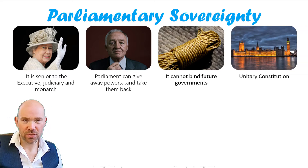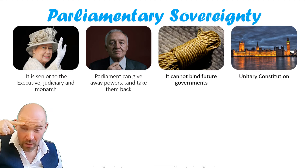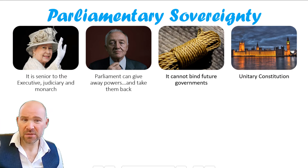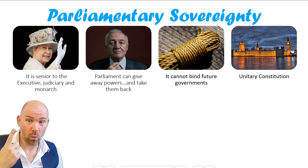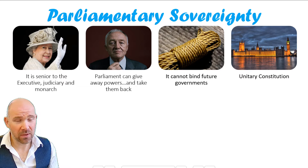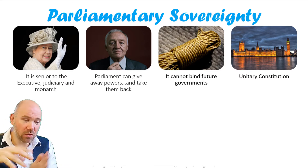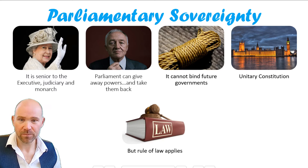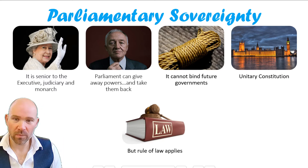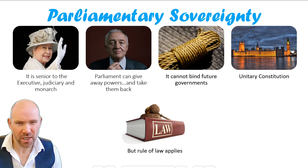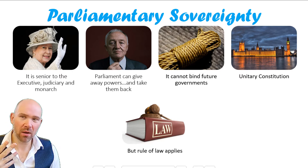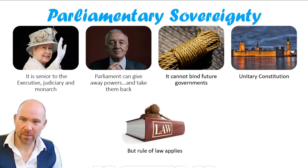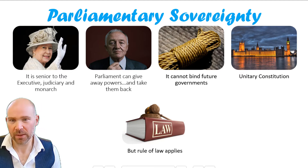It's also a unitary constitution — 'uni' meaning one, like unicycle, one wheel. All power in the constitution ultimately lies in one place: parliament. Unlike a federal constitution, where power is split between the federal government and state governments, in a unitary system it all comes from one place. The rule of law applies — individual members of parliament and parliament itself must follow the laws — but they can also change the laws, which makes it a bit of a grey area.